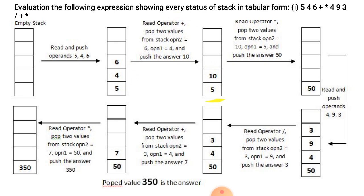Now for postfix expression evaluation: the stack contains values 5 and 10. The next operator is multiplication. We read the operator multiplication and pop two values from the stack — operand 2 is 10 and operand 1 is 5. We apply multiplication: 10 into 5 is equal to 50. This result 50 is pushed onto the stack.